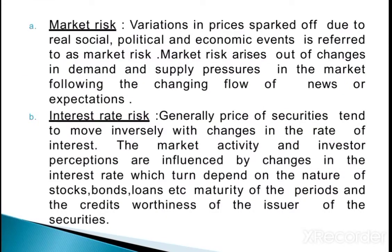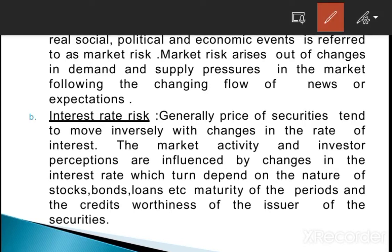There are some types of systematic risk. First is market risk, which is a part of systematic risk. Market risk means variation in price sparked off due to real social, political, and economic events. Market risk arises out of change. When we talk about market risk, we talk about the demand and supply pressure in the market. If supply is more or demand is more, that affects the prices of a particular commodity in the market, and that is not under control.